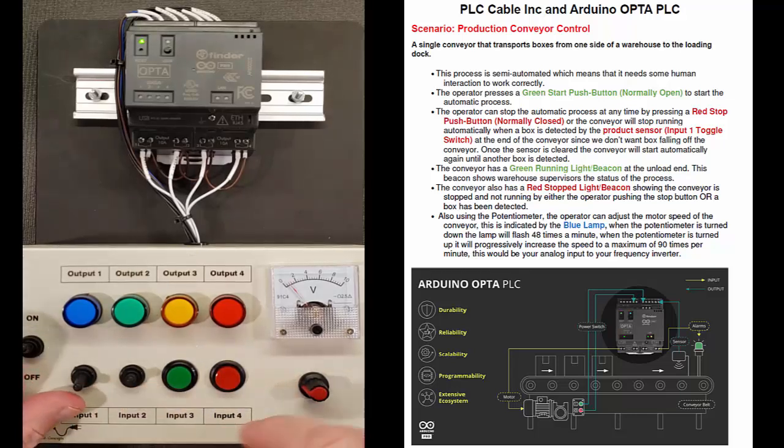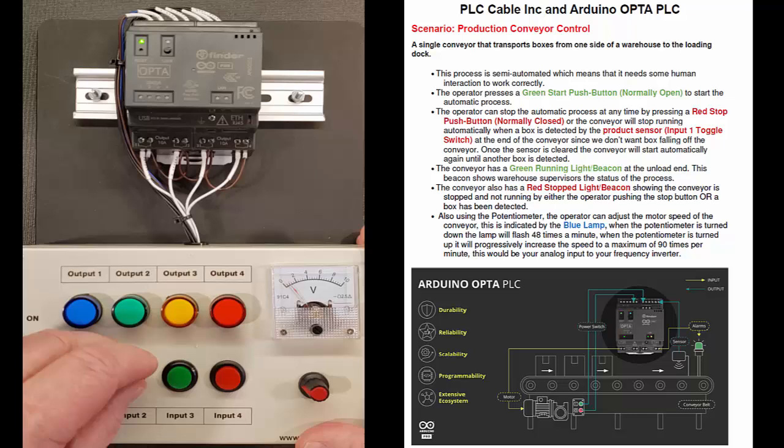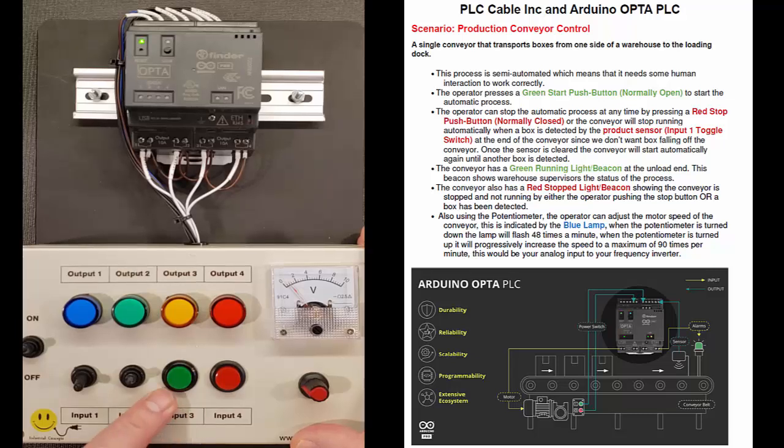The inputs: input one is going to be our photo cell at the end of the conveyor to detect that there's something present at the end of the conveyor. Input two is wired up but it's not actually used in our program. Input three is our green push button which will be our start or automatic start and that'll latch in and keep the program running. Four is our red normally closed push button. This is normally open on our green one. Normally closed red input number four is going to stop the automatic cycle.